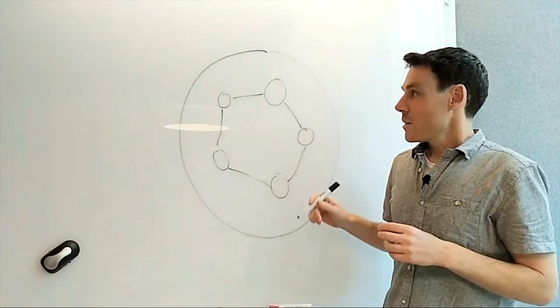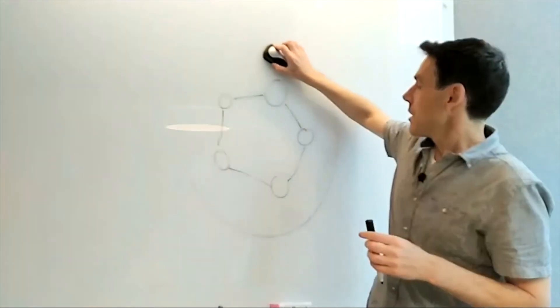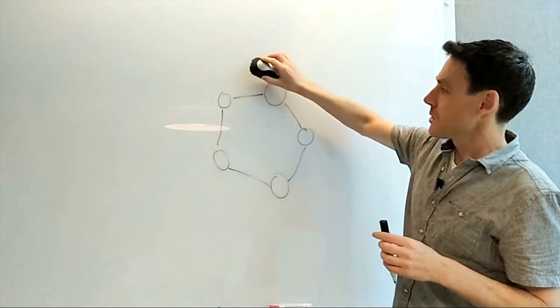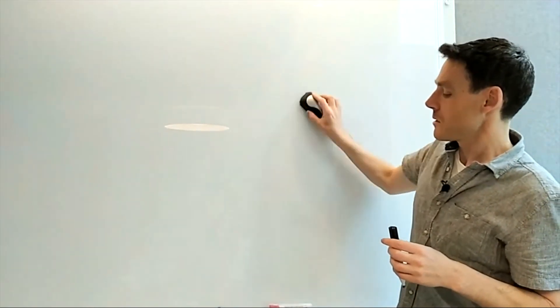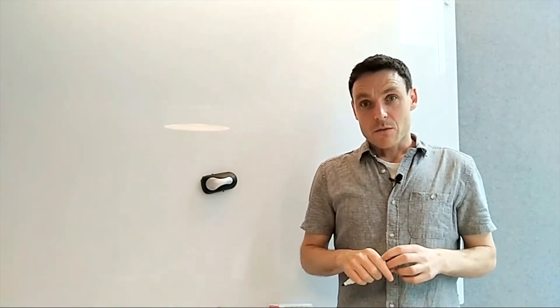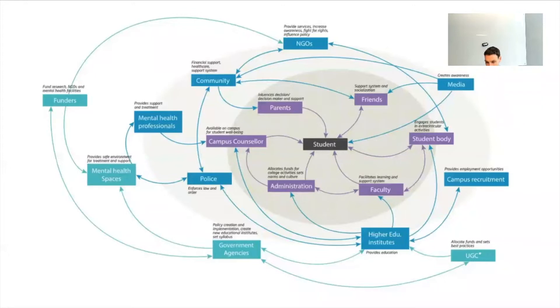We're always representing a system, which is a set of elements and relationships between those elements. Let's jump in to take a look at a couple of examples of systems maps. Here's a systems map, a representation of a system as we just talked about. We can see the elements and the relationships between them. This is a map of students, particularly the issue of student depression and suicide in India.